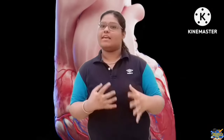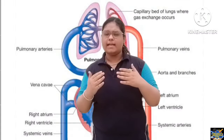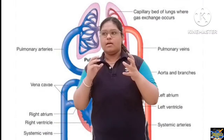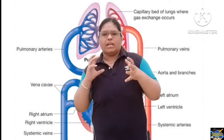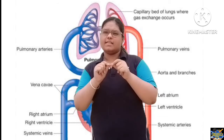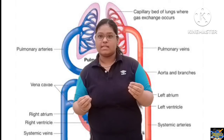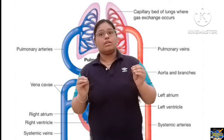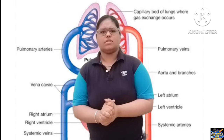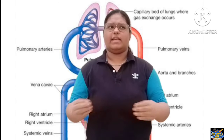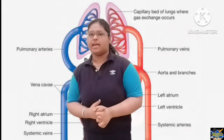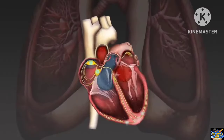Our heart has a layer which is a thali-type structure, like polythene. This is a protective layer called the pericardium. If you open the pericardium, you will see the red structure which is the heart.